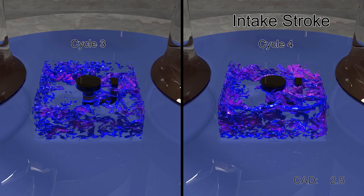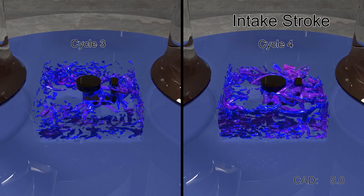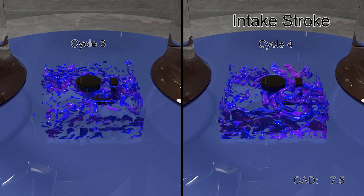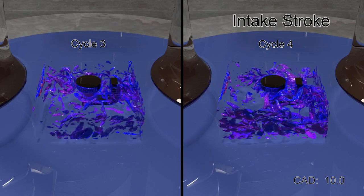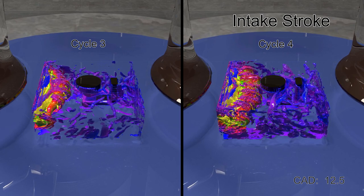Focusing on the spark region from one cycle to the next, we see that the jet can impinge on the spark at different times. Here, for example, the vorticity contours with the high velocity reach the spark plug at slightly different points in time between these two consecutive cycles.